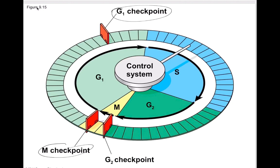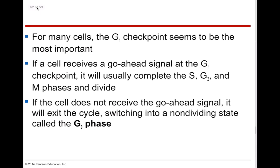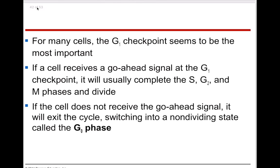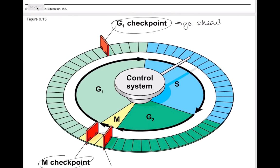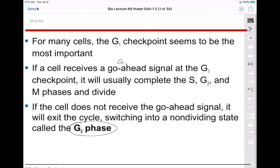The G1 checkpoint is known as the go-ahead checkpoint. For many cells this is the most important: if a cell receives the go-ahead signal at G1, it will typically complete the entire cell cycle and go on to division. If the cell does not receive a go-ahead signal, it goes into something called the G0 phase — a non-dividing phase. Essentially, if stopped at G1, the cell leaves the cycle and enters G0.